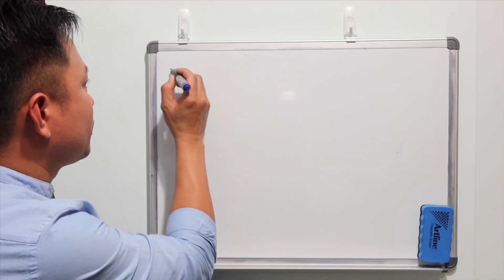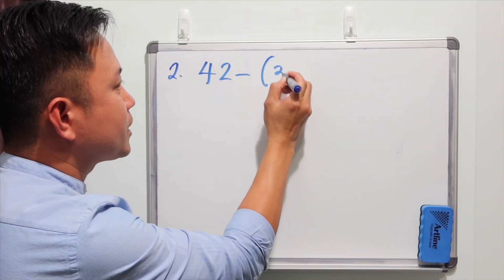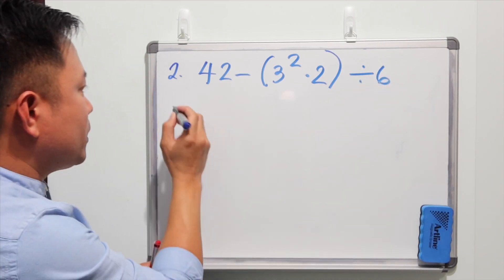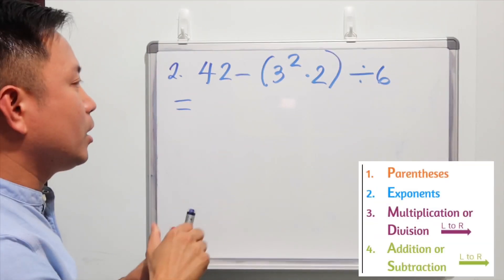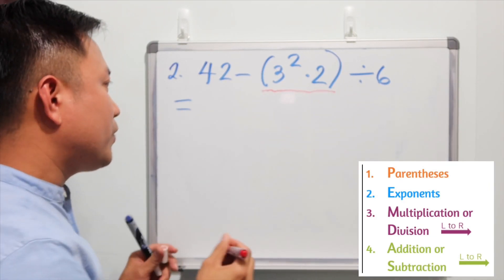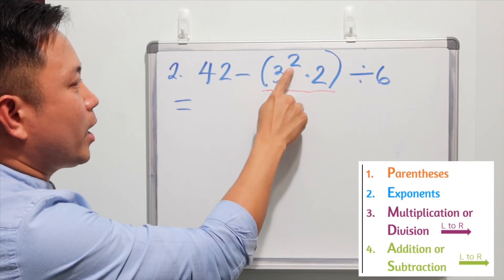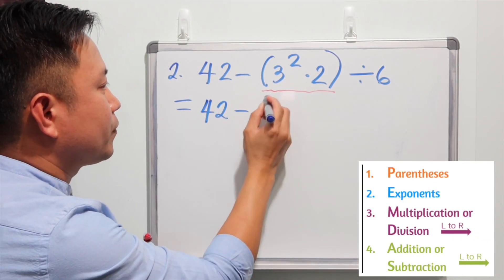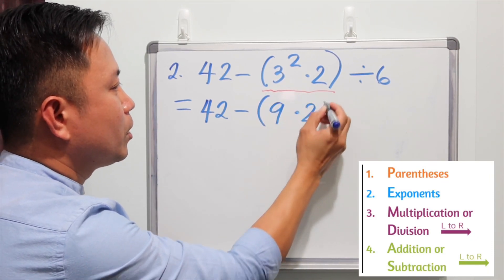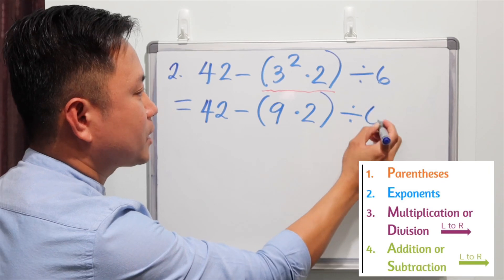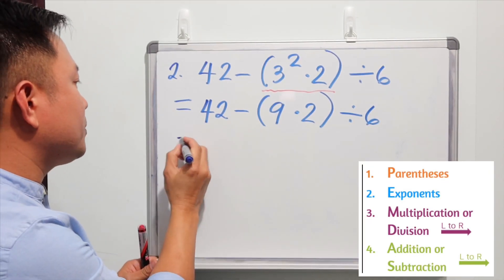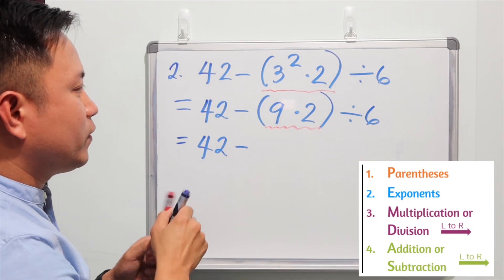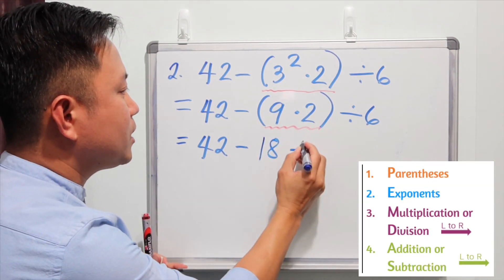Example number two: 42 minus parentheses 3 squared times 2, close parentheses, divide by 6. Using the order of operations, we simplify the grouping symbol first. Inside the parentheses we have 3 squared times 2. We simplify the exponent first: 3 squared is 9. Then 9 times 2 gives 18. So we now have 42 minus 18 divided by 6.